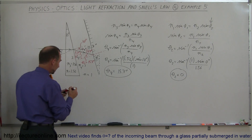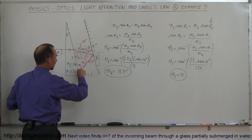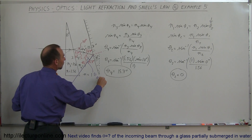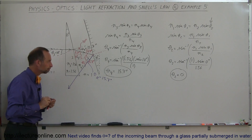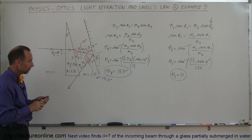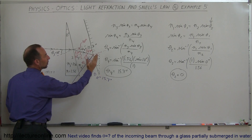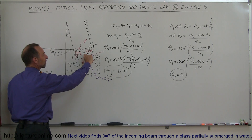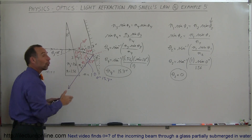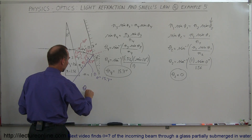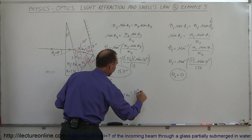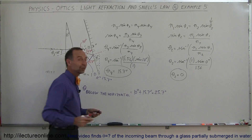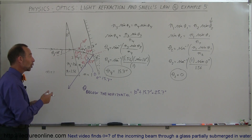The angle of incidence on the mirror is 15.7°, which means the angle of reflection is also 15.7°. The reflected beam is 15.7° below the normal to the mirror, and since the mirror is slanted so that its normal points 10° below the horizontal, adding another 10° gives 25.7°. So the final direction of the reflected beam is 25.7 degrees below the horizontal.